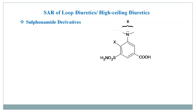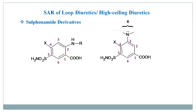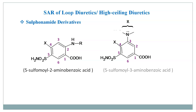For this, we have two general structures. The numbering of these two rings is shown here. These are 5-sulphonamide 2-amino benzoic acid and 5-sulphonamide 3-amino benzoic acid. This is the general structure of these sulphonamide derivatives considered for discussion of structural activity relationship.